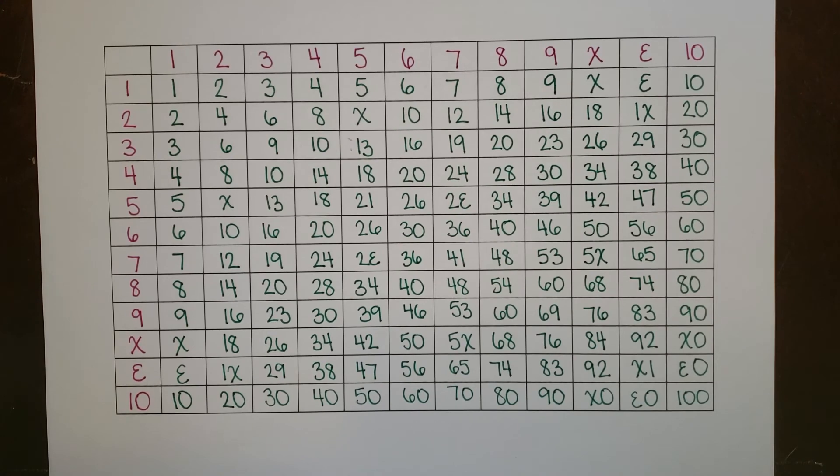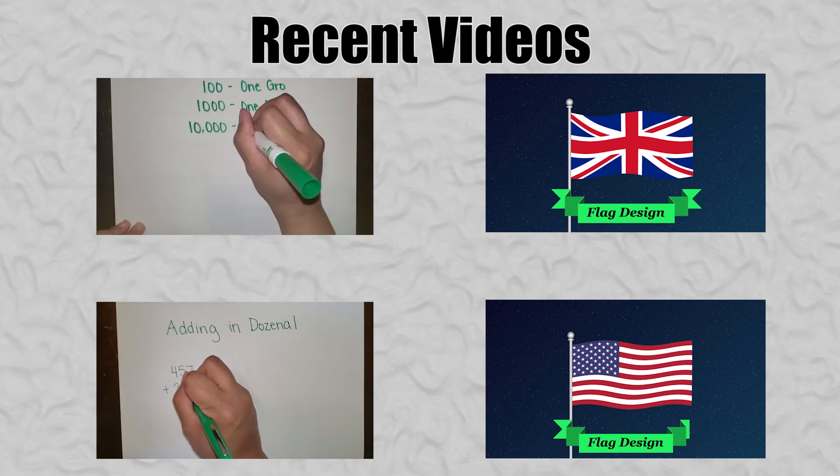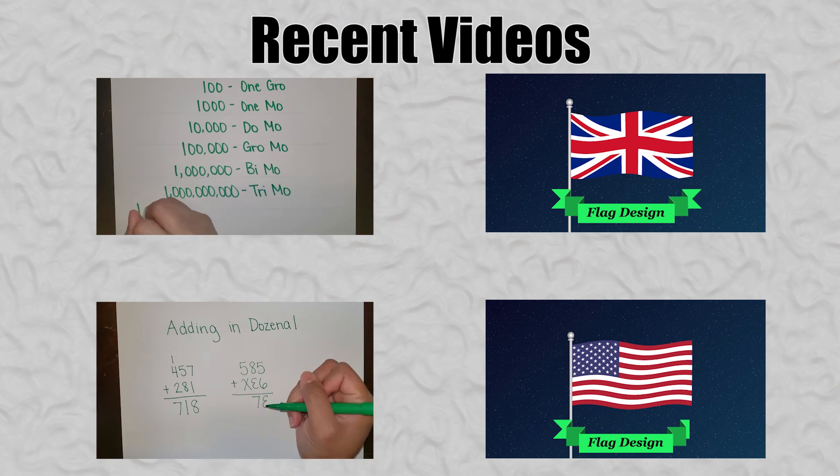Now we have a completed table. If you wanted to learn how to multiply larger numbers in dozenal, I would strongly suggest trying to memorize your multiplication table. Next week I'll be using this table to show you how to multiply larger numbers. And the week after that I'll be showing you how to do long division in dozenal. Thank you.